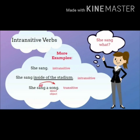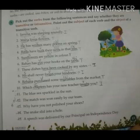'She sang inside the stadium' — it is still an intransitive verb because it is not answering the question 'what she sang'; it is only telling where she sang. But when we say 'she sang a song,' now it has turned into a transitive sentence because it answers the question 'what she sang — a song.' I hope students now you understand transitive and intransitive verbs better.